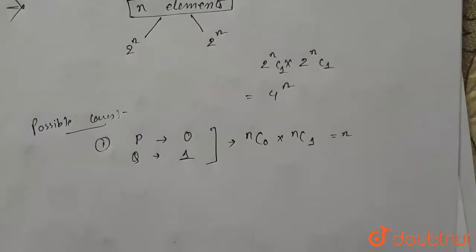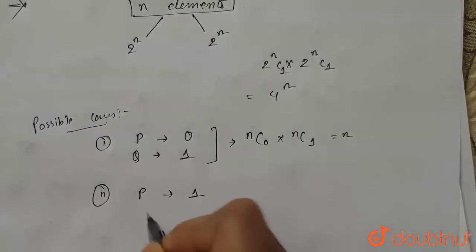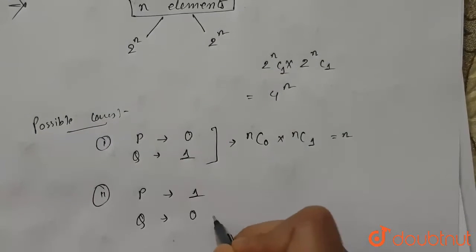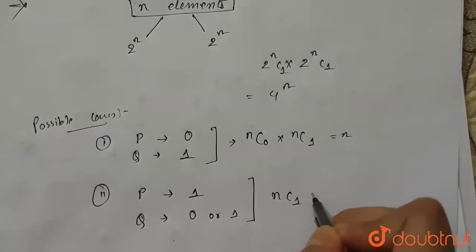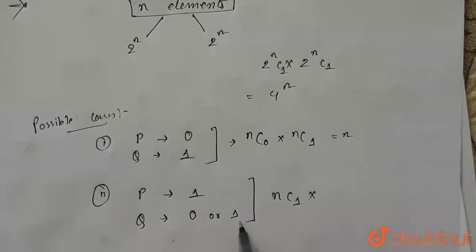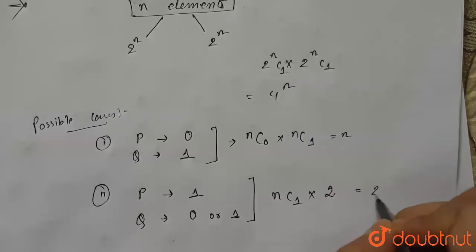The next possible case is that when P contains one element and Q contains either zero or one element. From here we can say that n C1 into, now for Q there are two ways, so into 2, which is equal to 2n.